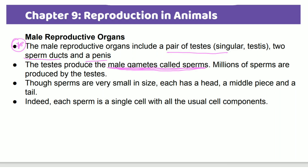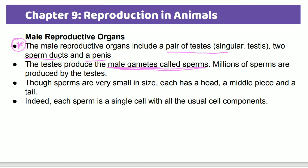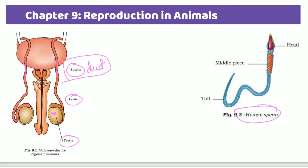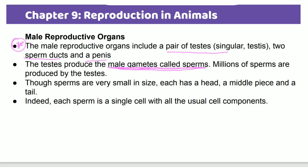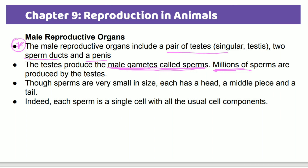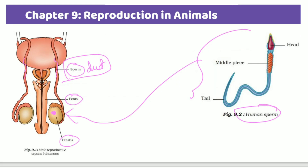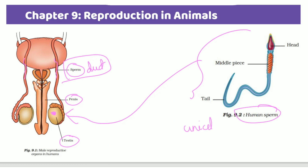Millions of sperm are produced by the testes. Sperm is very small. It consists of a head, a middle piece, and a tail. The sperm cell is a single cell — it is unicellular.